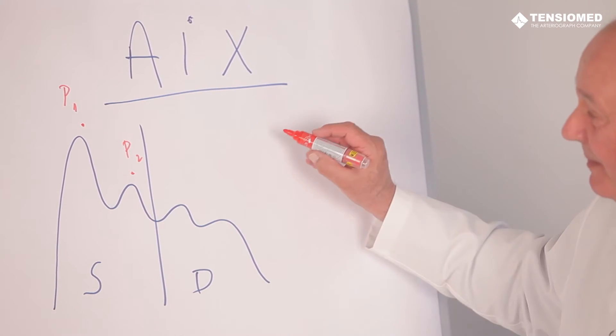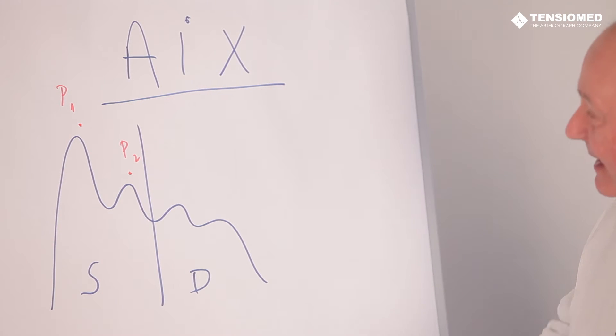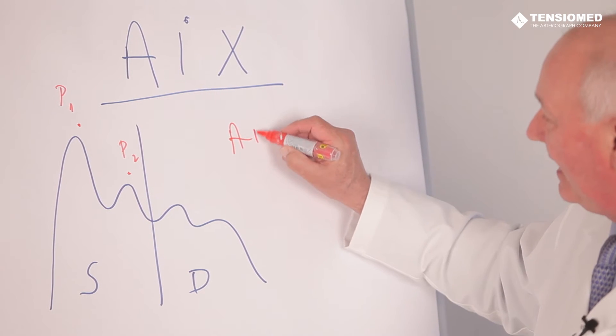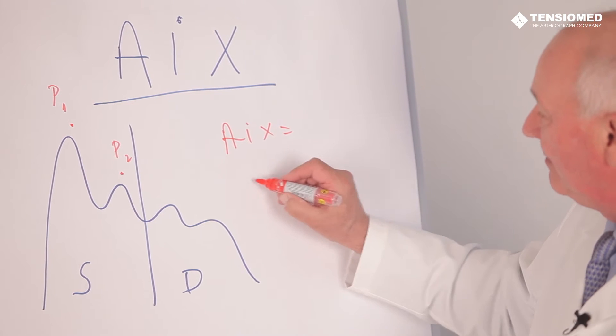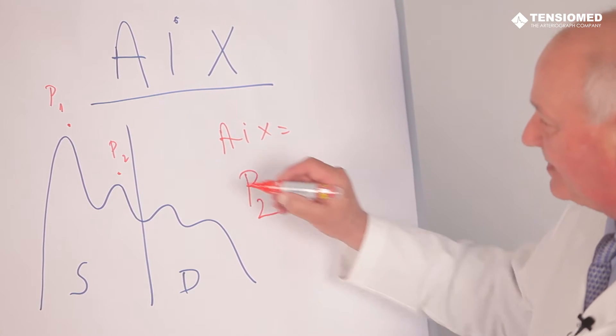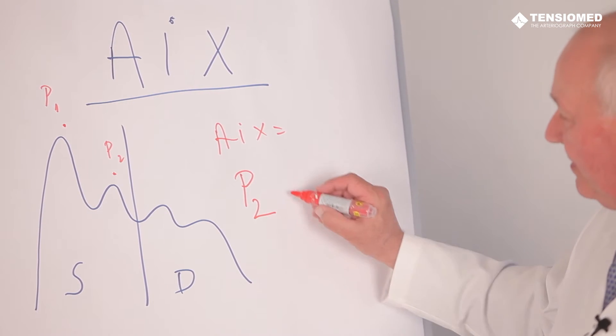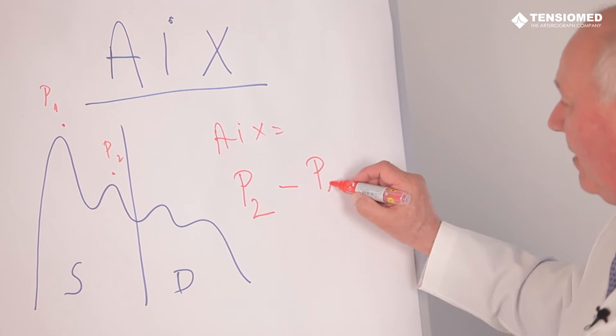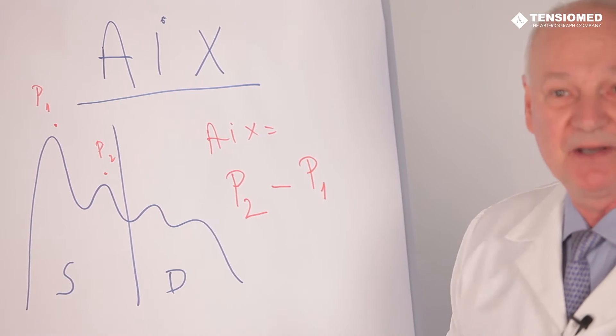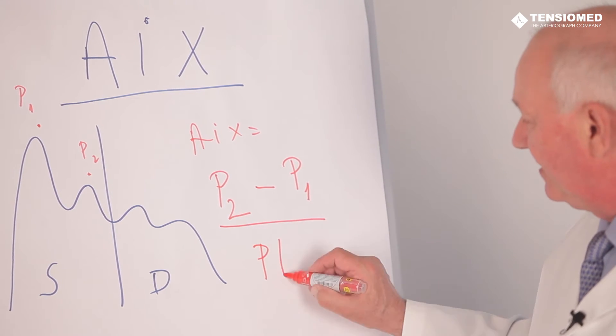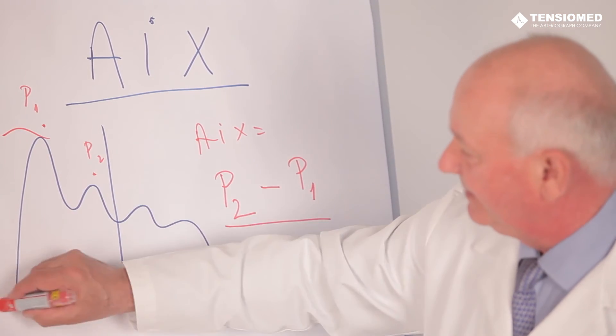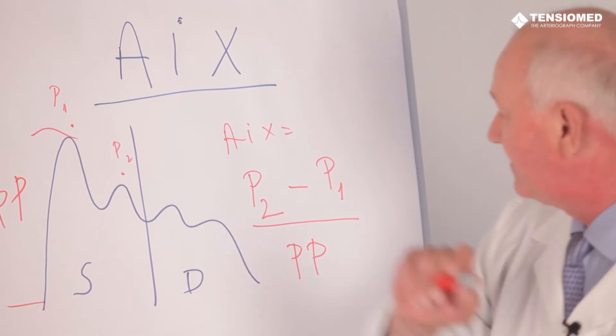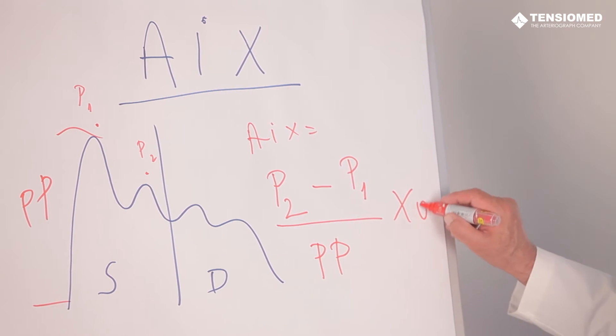The formula of the augmentation index says that AIx equals the P2 pressure, the reflected wave pressure amplitude, minus P1, the direct wave pressure amplitude, divided by the pulse pressure, which is the difference between the systolic and diastolic pressure, and multiplied by 100.